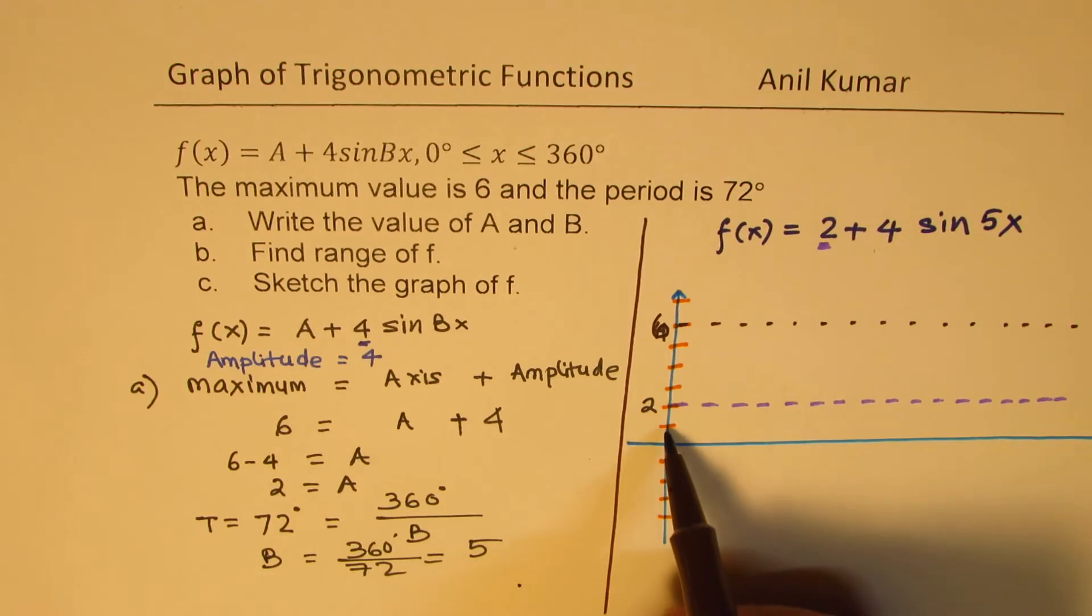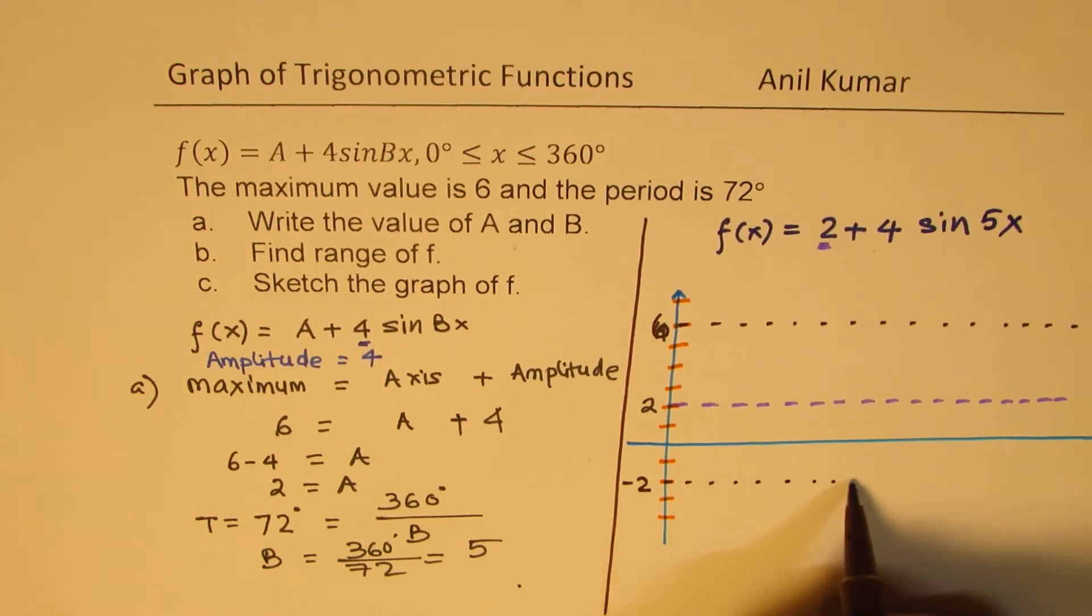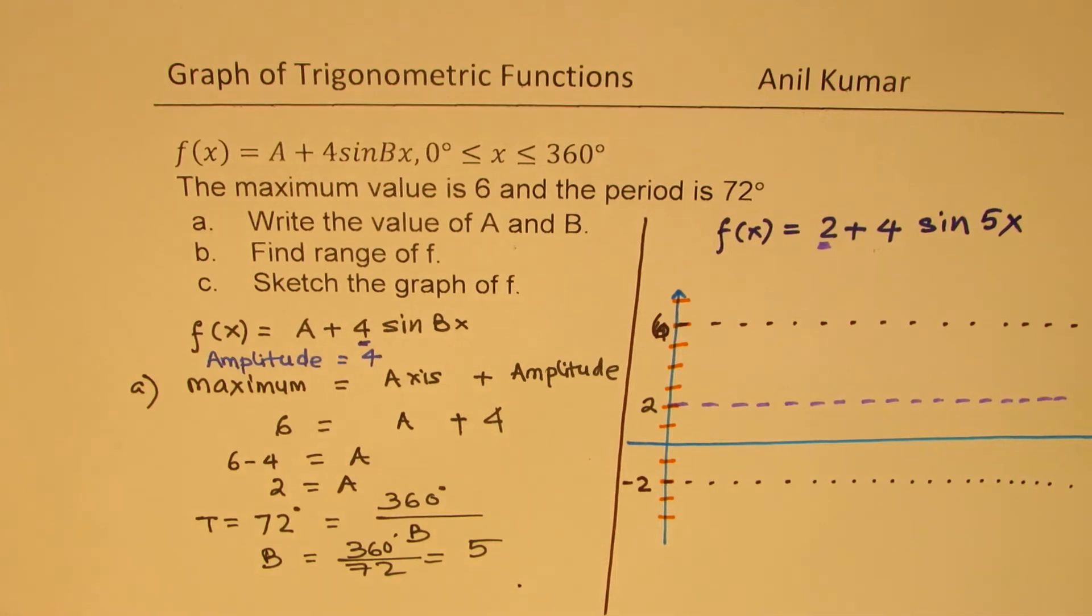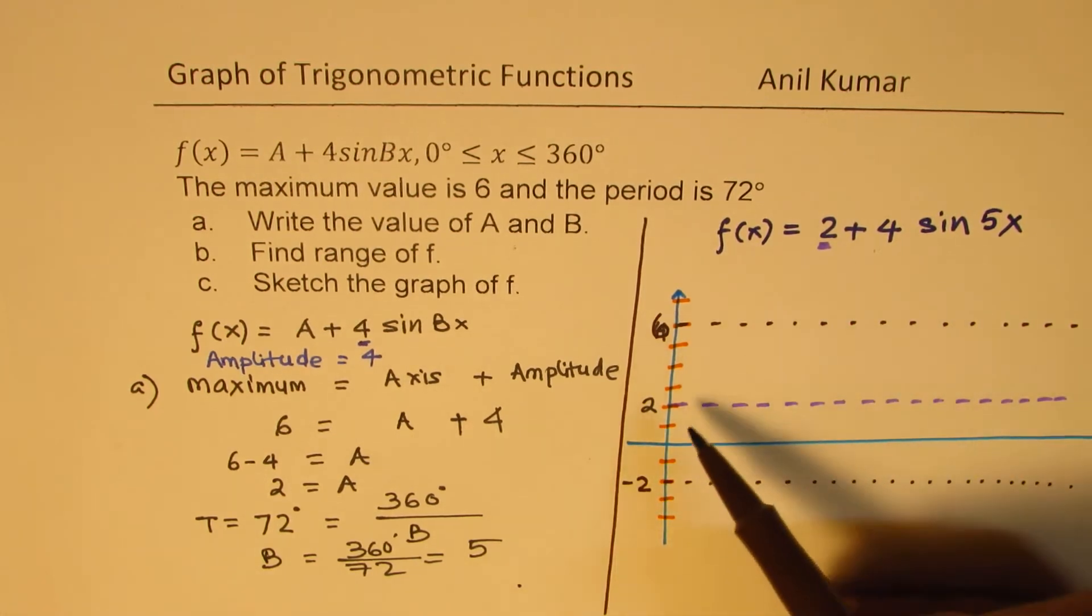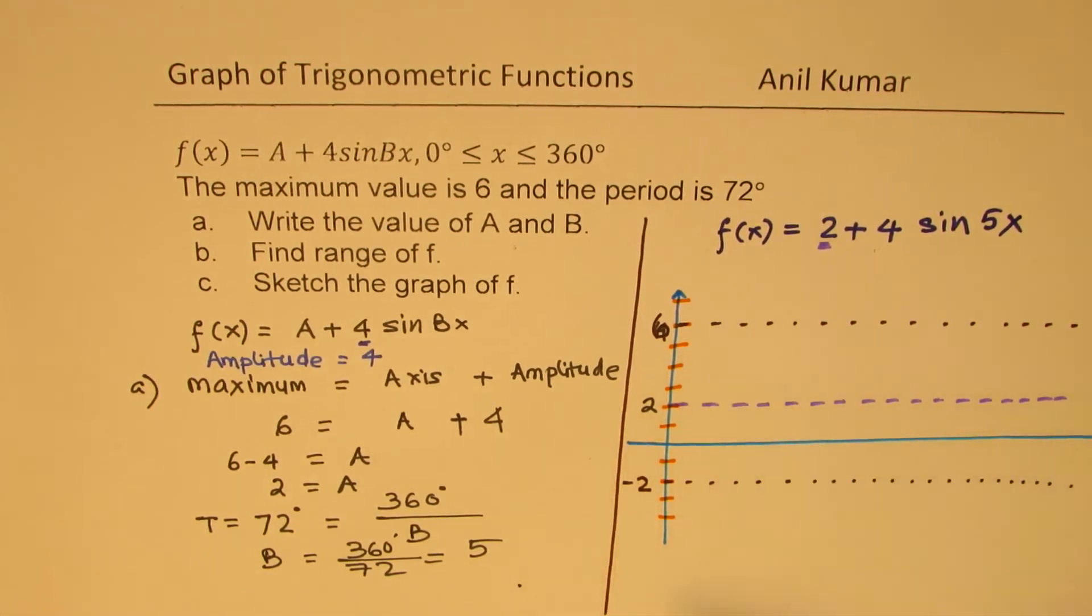Minimum will also be 4 units down, 1, 2, 3, 4, which will be at minus 2. So, these dotted lines only indicate that we have a sine function touching maximum and minimum.